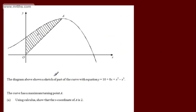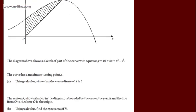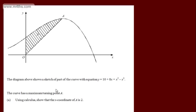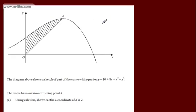We're told the diagram shows a sketch of part of the curve with equation y equals 10 plus 8x plus x squared minus x cubed. The curve has a maximum turning point A. In part A, using calculus, show that the x-coordinate of A is 2. This question now takes us back to differentiation — many of these questions expect you to use a range of skills, not purely integration.